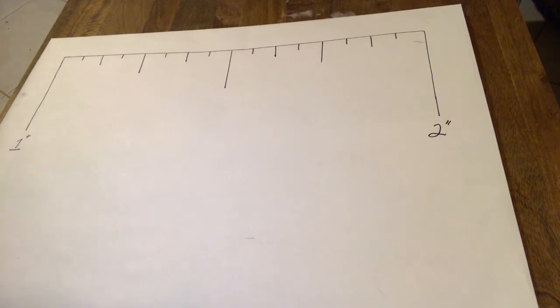So, your longer tick marks on your tape measure are your inch marks, whether it's one, two, three, four. Now, in between them...